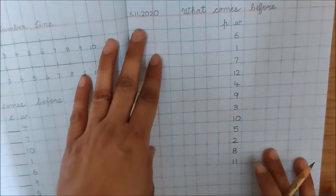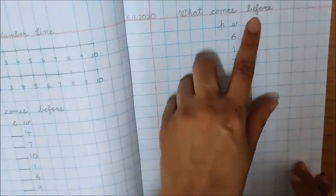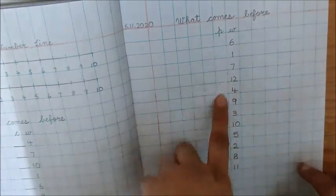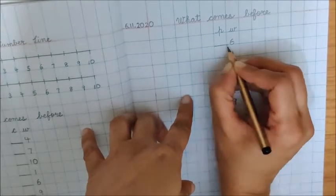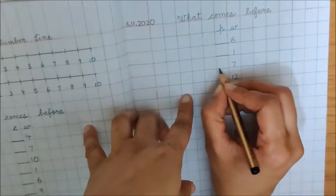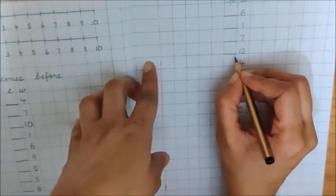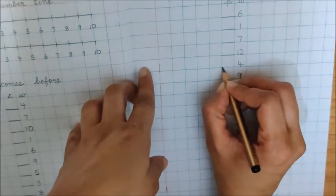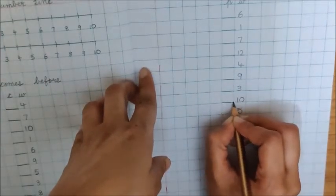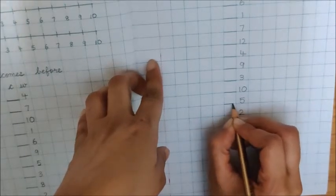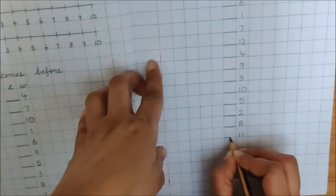I hope you have written the numbers. Now, it's time to put dash. Where will the dash come? What comes before? Since we are doing before, so the dash will come before the numbers. So below P, children, just before number 6, put a dash. Now, here also dash before 1, dash before 7, dash before 12. So, you can see I am putting dash before the numbers. See, I am making the dash on the blue line. Dash, dash, dash, dash.